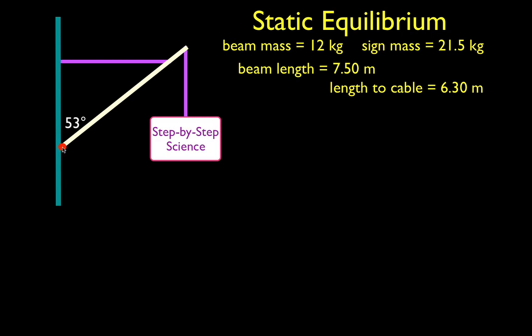This red point is our axis of rotation — the beam could rotate about that axis of rotation. The beam is supported by the cable, and the distance from the axis of rotation to the cable is 6.3 meters. This is a static equilibrium problem in that nothing is moving, everything is static, and therefore all the forces and torques are in equilibrium.